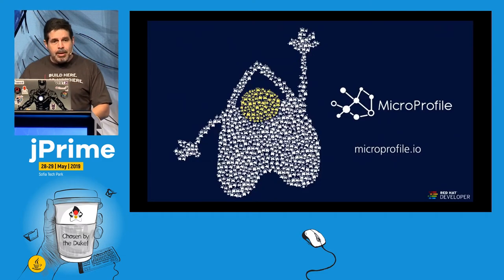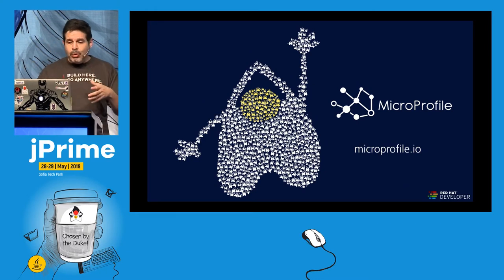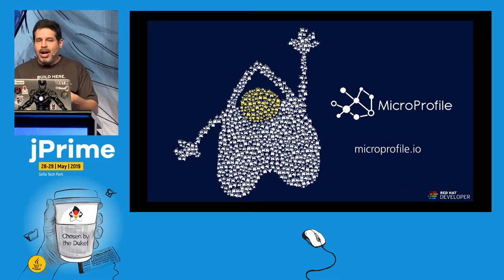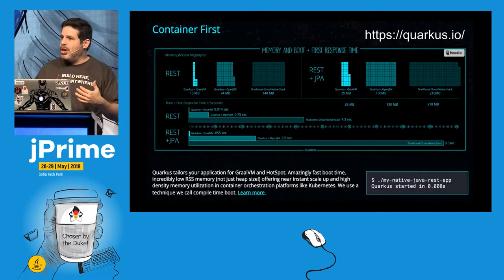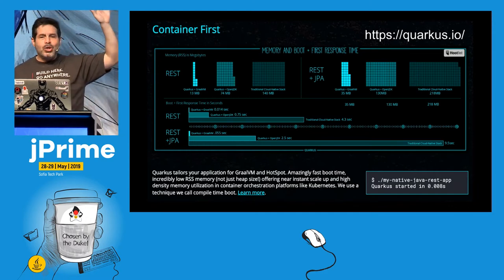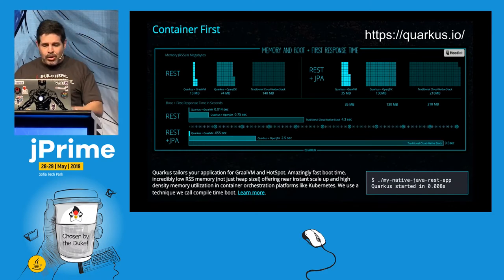Also my book, Microservices for Java Developers, second edition — I rewrote it to include MicroProfile, Camel, and OpenTracing. Speaking of MicroProfile, if you adopt MicroProfile you will be able to use Quarkus. Have you heard about Quarkus? For those who haven't, let me show you a quick demo.